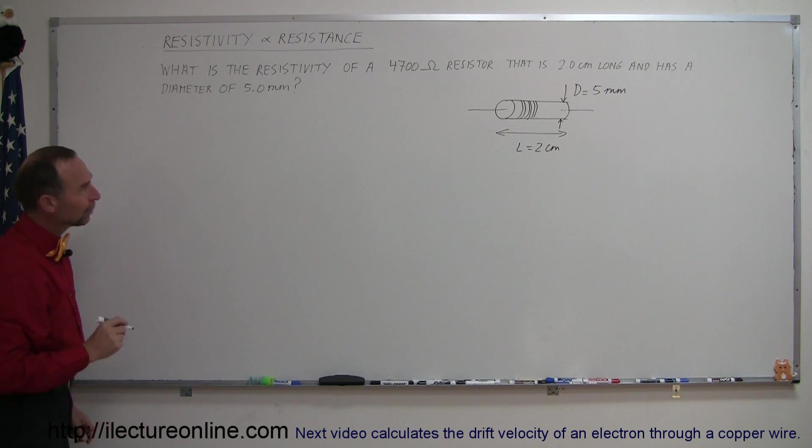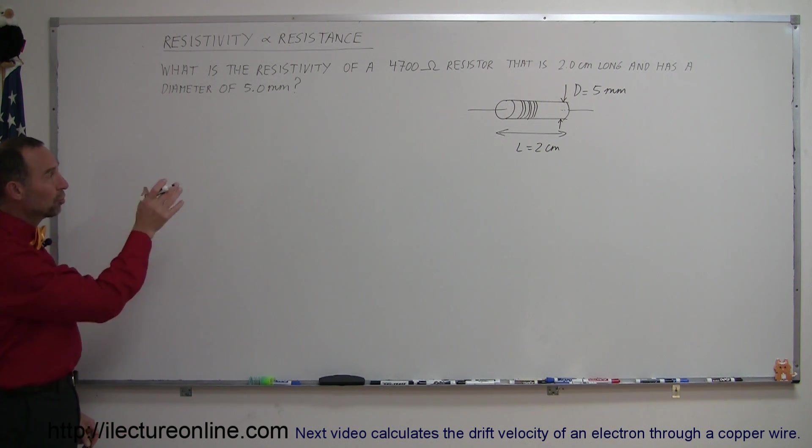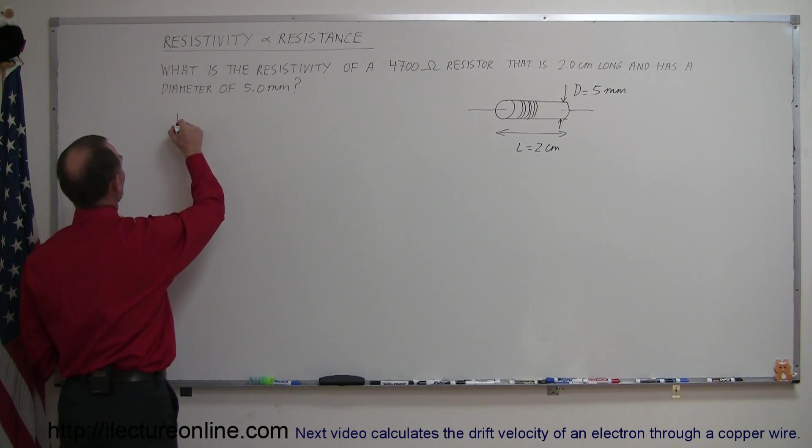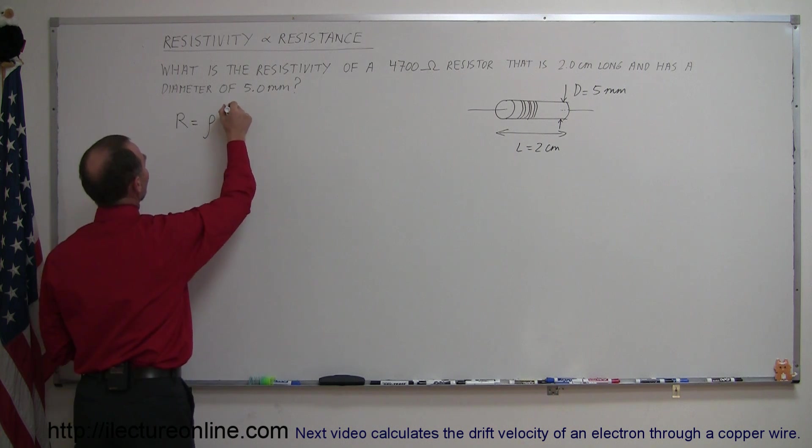And we're supposed to find the resistivity of the material that's used to make up that resistor, knowing that the resistance is 4,700 ohms. Using the equation, we can say that the resistance equals the resistivity times the length divided by the cross-sectional area.